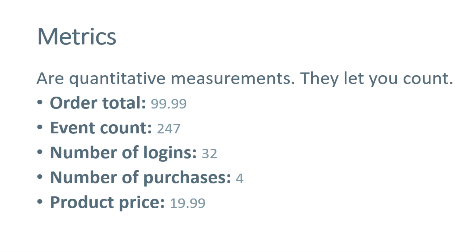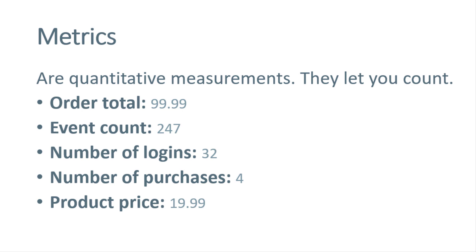But in this case, things like order IDs or coupon codes, they are dimensions. If we take a look at the reports in Google Analytics 4, on the left side you see a dimension which is page path, and on the right side we have two metrics: active users and event count. In this case, I have filtered down to the page view event, so these are the numbers of page views on these particular pages.